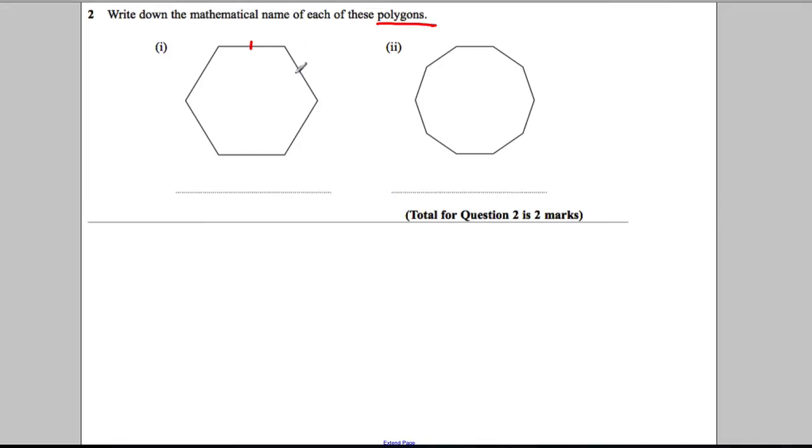So this polygon has one side, two sides, three sides, four sides, five sides, six sides, and it's called a hexagon.